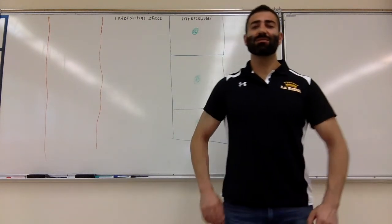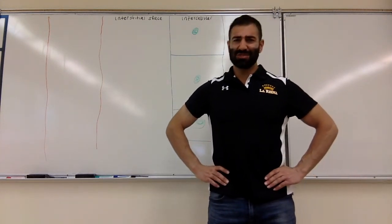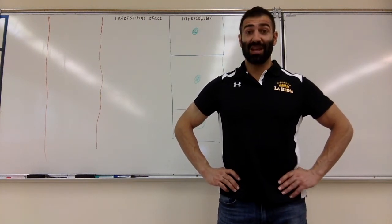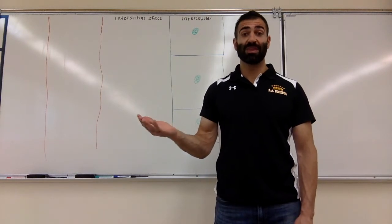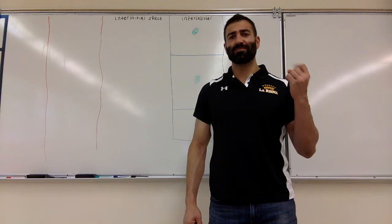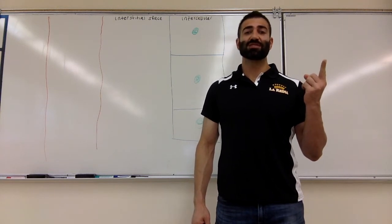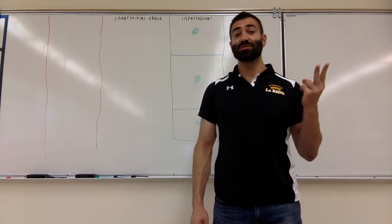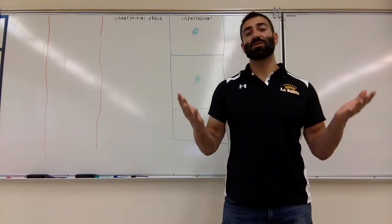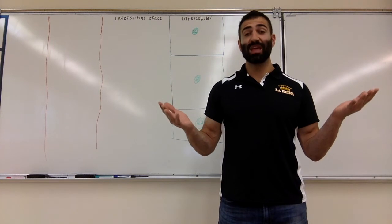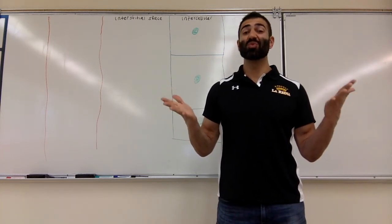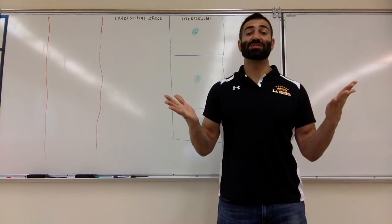I tell my students on the first day - and it's a bit interesting today because this is an online course and I'll mainly be interacting with you through videos - but physiology is really about two things: concentration gradients and surface area development. It's amazing how we are one individual, yet we're made up of basically 60 trillion tiny units called cells.